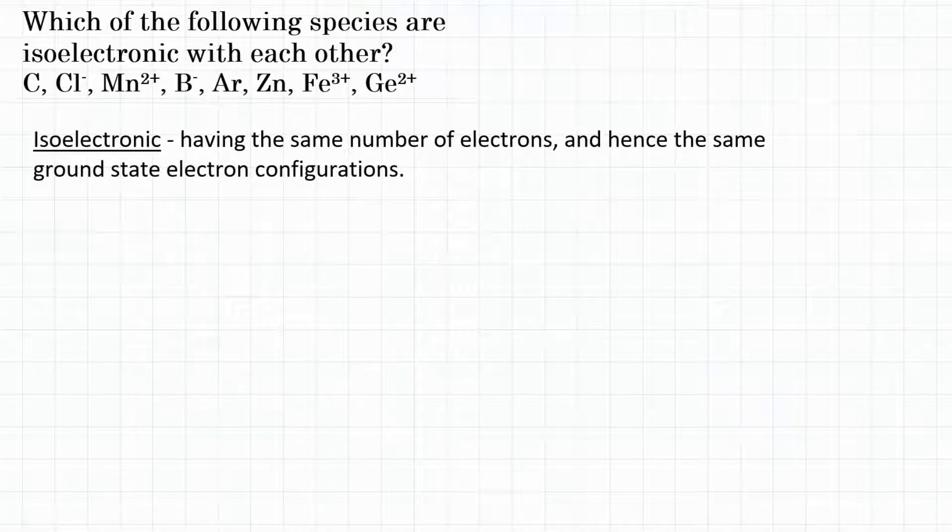Alright everyone, the problem says, which of the following species are isoelectronic with each other? And then lists a number of atoms and ions. So first thing, what is isoelectronic?